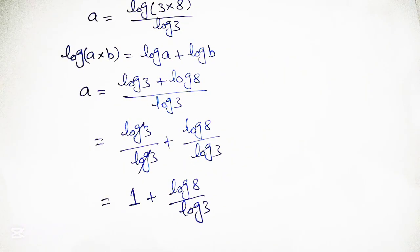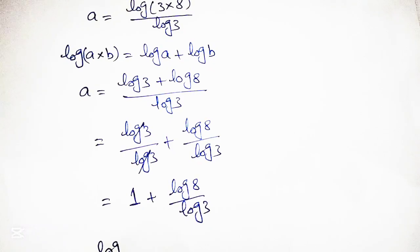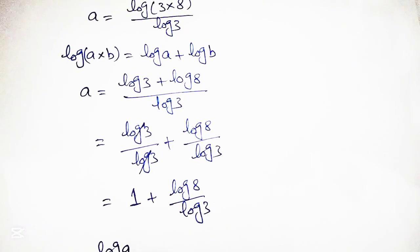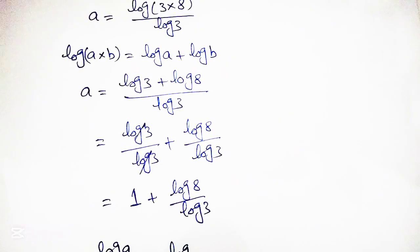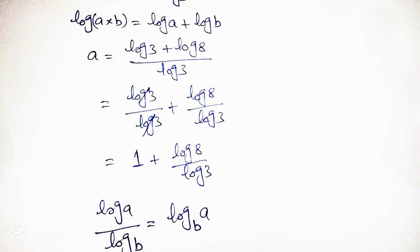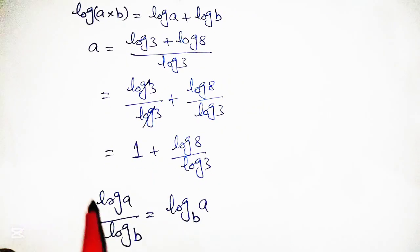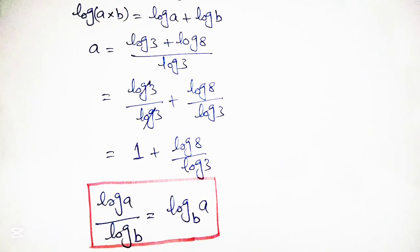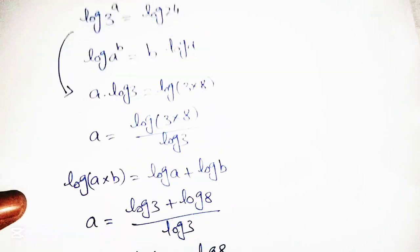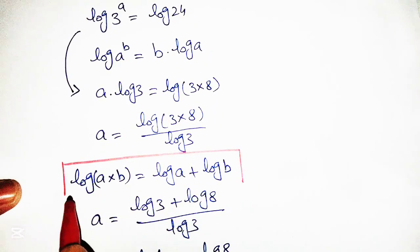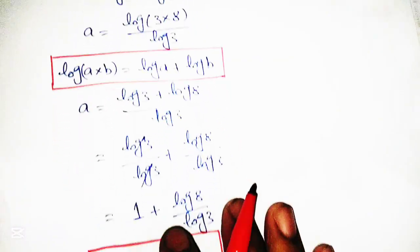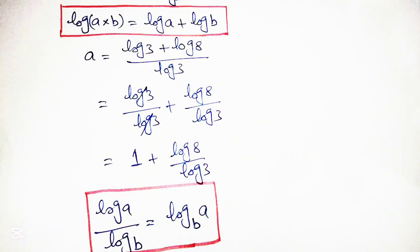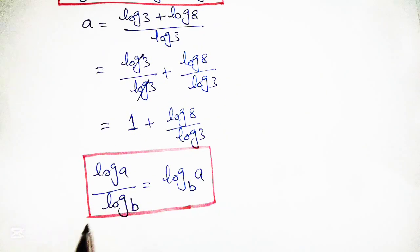Here we apply another logarithmic formula: log of a over log of b is equal to log base b of a. In other words, b becomes the base of the logarithm. These are the highlighted formulas we are using to simplify the equation.